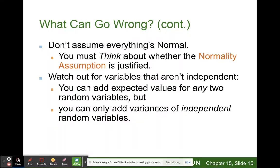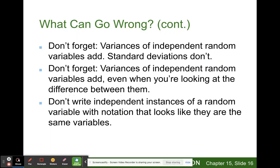You must think about whether the normality assumption is justified. Watch out for variables that aren't independent. You can add expected values of any two random variables, but you can only add the variances of independent random variables. Don't forget variances of independent random variables add. Standard deviations don't. Also, don't forget variances of independent random variables add, even when you're looking at the difference between them. Addition and subtraction are basically the same thing. You're just adding the negative number.